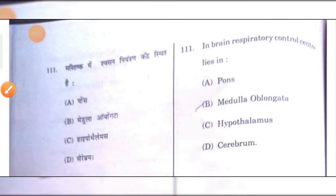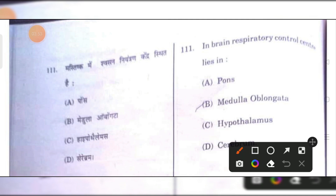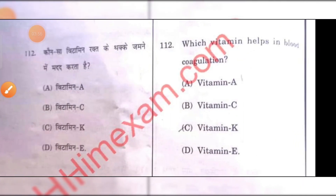In the brain, the respiratory control center — B is the right answer.